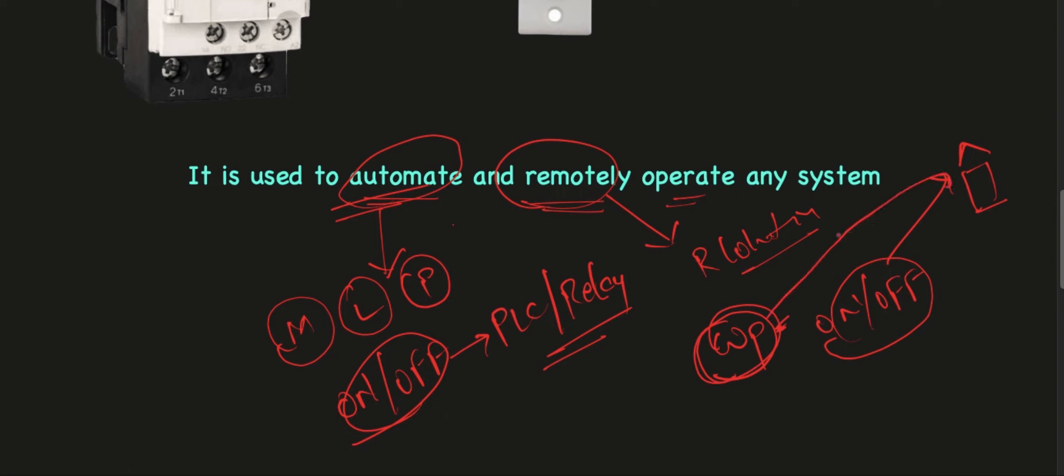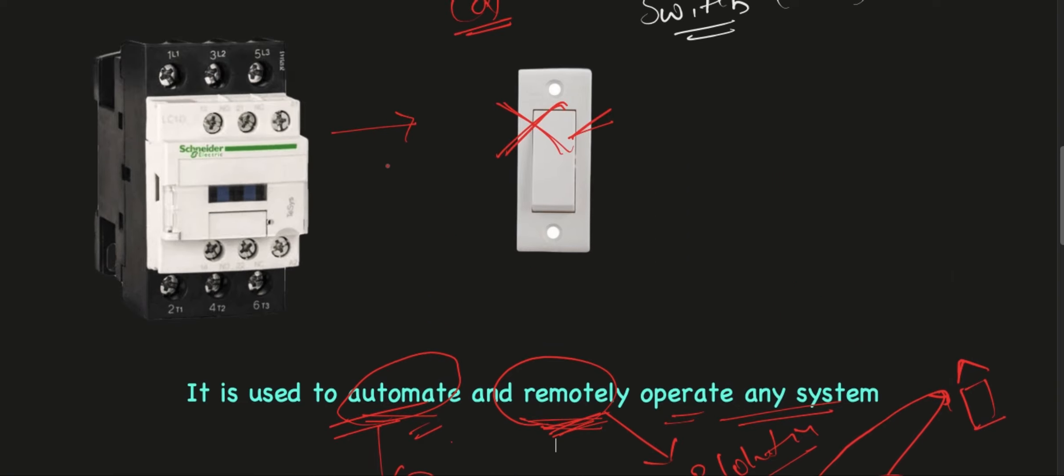In this case you are remotely operating your water pump from your home. This is called remotely operating any system. By using a contactor you can automate the system as well as remotely operate any system. But remember one important point: contactor does not provide any protection to the circuit.